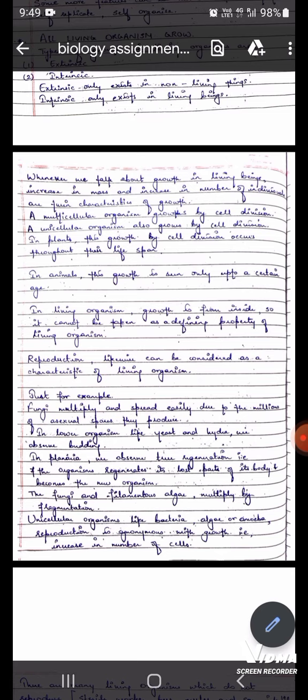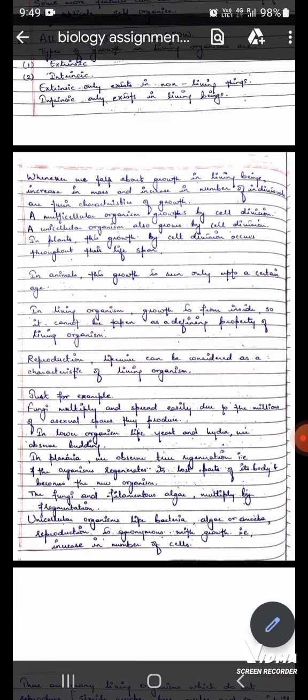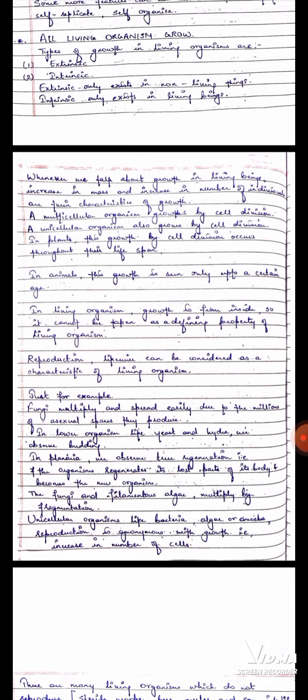And in plants, this growth by cell division occurs throughout their lifespan. Plants grow until they are alive. In animals, this growth is seen only up to a certain age. Like for example, human beings. We will grow until we reach a certain age, whether it is an increase in mass or number of individuals, or our height. And if we have to reproduce, it is at a certain age.